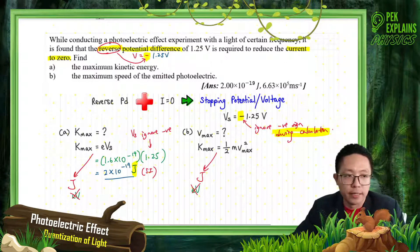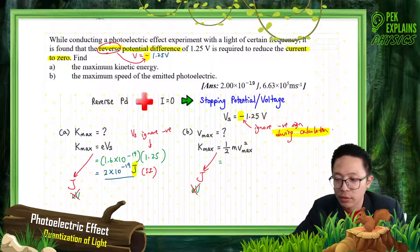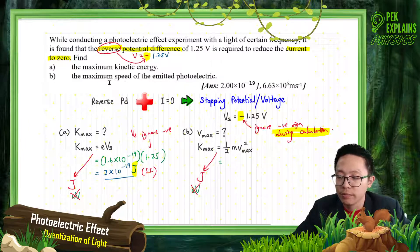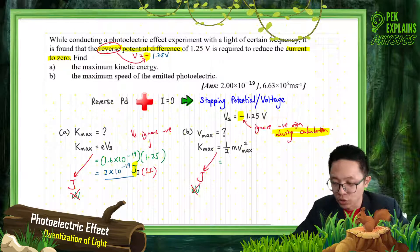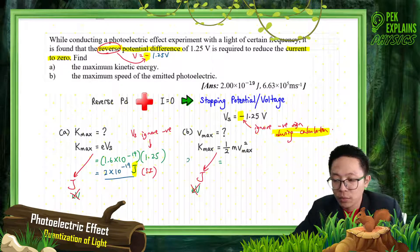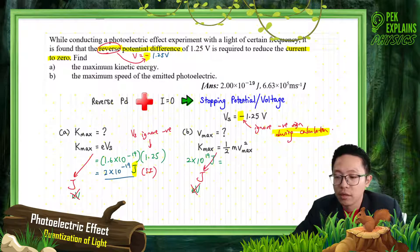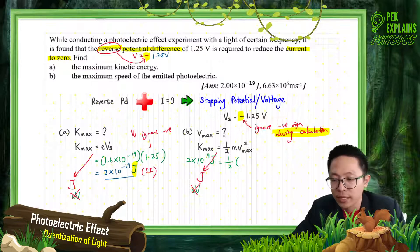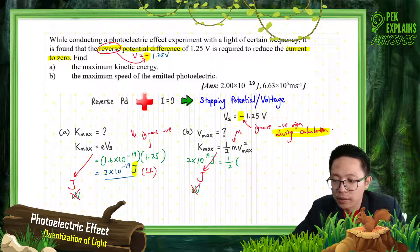Now we want to find Vmax — the maximum speed of the emitted photoelectron. We have Kmax in Joules, so we can substitute directly since it's SI unit. If it were in electron volts, we must convert to Joules first before substituting. The mass here is the mass of the electron, which is 9.11×10⁻³¹ kg.